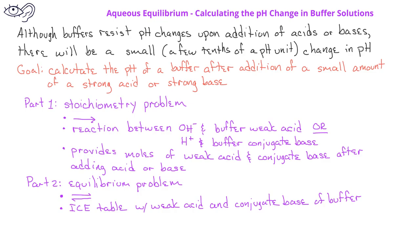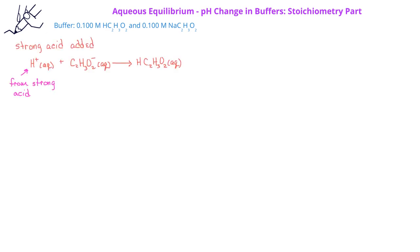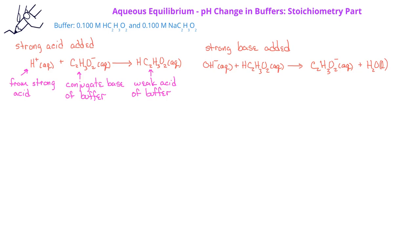The only difference is that the initial amounts for the weak acid and the conjugate base will come from the stoichiometry problem that we just discussed. We'll work with a buffer solution that we previously worked with — the acetic acid/sodium acetate buffer solution in which we have 0.100 moles of each component. If we were to add a strong acid to this buffer solution, the hydrogen ion from the strong acid would react with the acetate ion conjugate base to produce an increase in the amount of acetic acid. However, if we were adding a strong base to this buffer solution, the hydroxide ion would react with the acetic acid component to produce an increase in the amount of sodium acetate present.